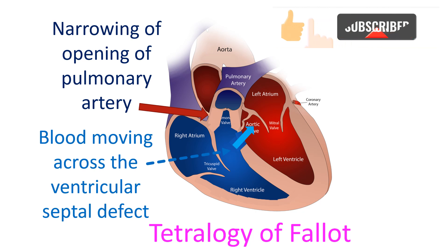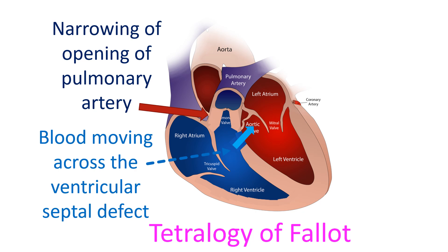In tetralogy of Fallot and similar birth defects of the heart, blood flow to the lungs is reduced due to narrowing of the opening to the pulmonary artery. Oxygen-poor blood in the right ventricle moves across the ventricular septal defect into the aorta. This leads to oxygen-poor blood reaching the whole body, producing a bluish colour known as cyanosis. Hence this group of diseases are called cyanotic congenital heart diseases.